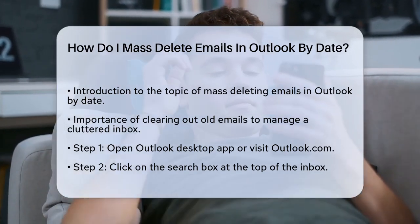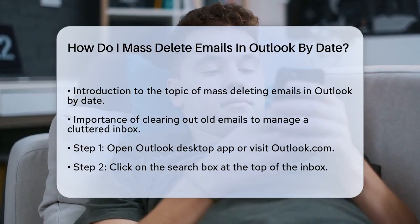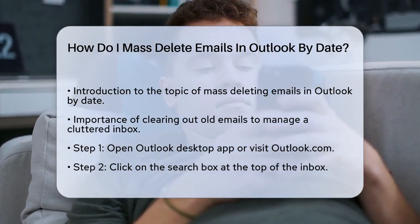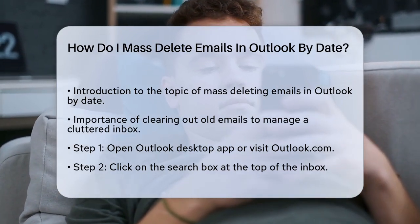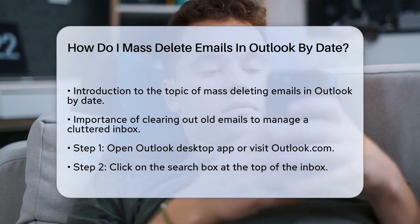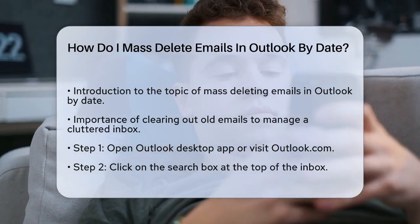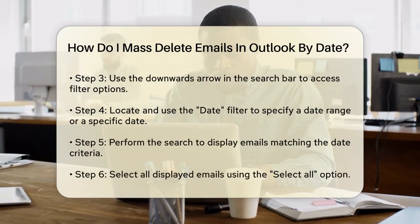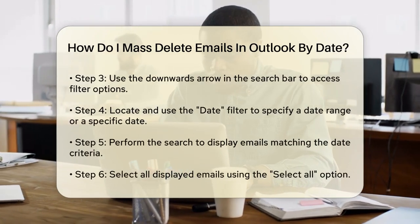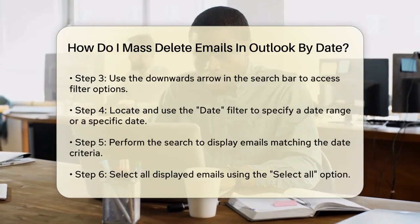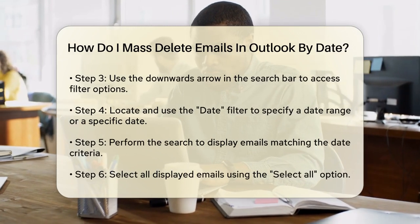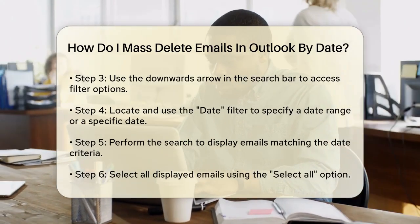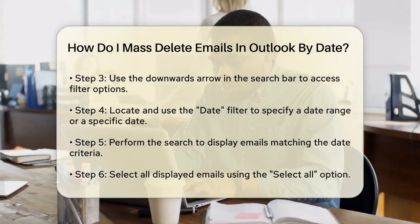In the filter options, look for the date filter. You can use this to search for emails within a specific date range or before a certain date. For example, if you want to delete all emails received before a specific date, enter that date in the date filter and click the blue search button.